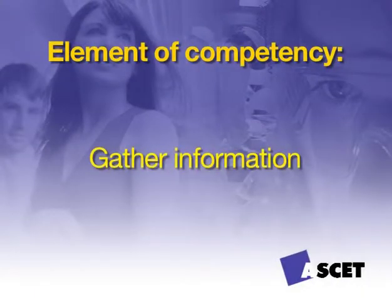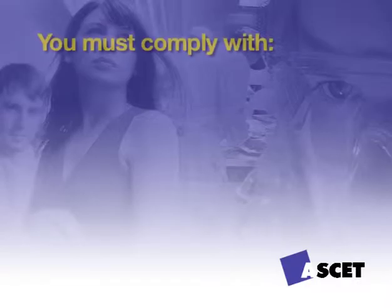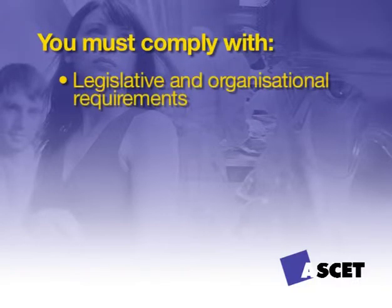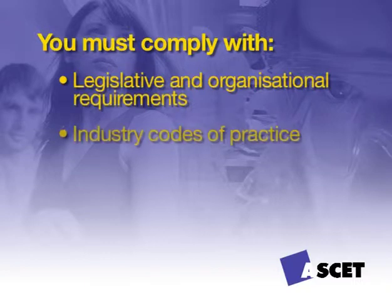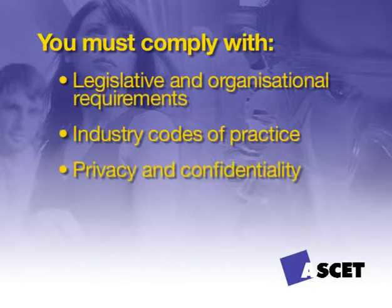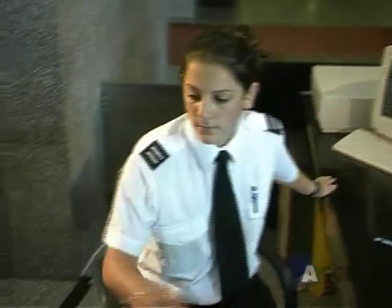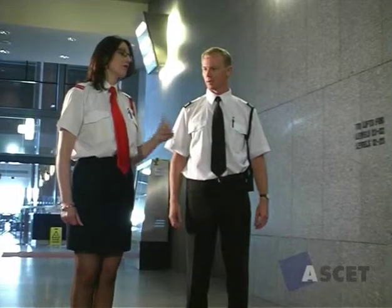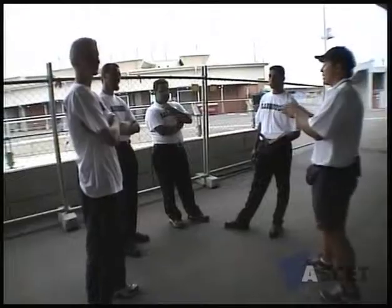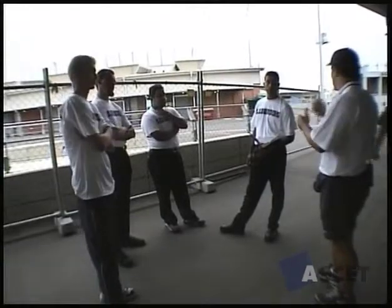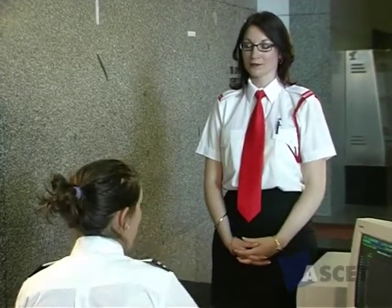Gather information. As a security officer you will need to comply with legislative and organisational requirements such as industry codes of practice, privacy and confidentiality, client service standards, and codes of conduct and ethics. Any assignment instructions such as timeline and activities must be identified and complied with. As a security guard you may receive written, spoken and electronic information relating to anything from clients and colleagues to reports and signage.